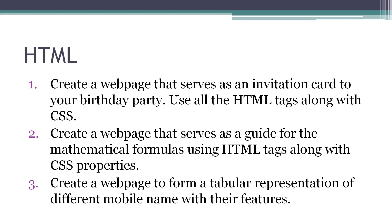From HTML, the first type of question is to create a birthday invitation card, where you will use all formatting text like bold, underline, italics, font color, page background color — all the properties of CSS and tags. The second question is about mathematical formulas, such as (a+b)², where you can write formulas and decorate the page with CSS like changing background color, writing formulas in bold, and using different colors. The third question is to create a web page showing a tabular representation of different mobile names with their features, and it is better to add simple CSS like page background color, table border, and table background color.